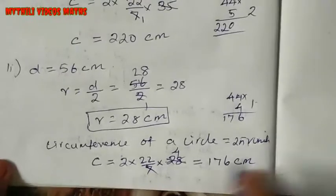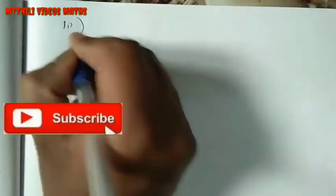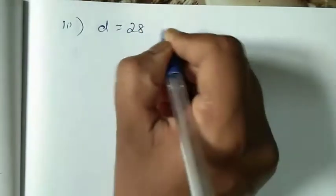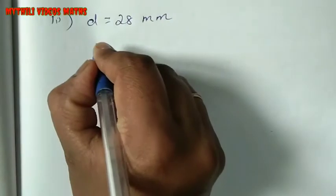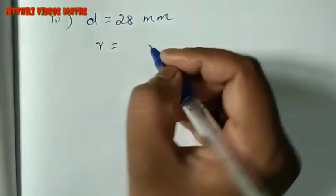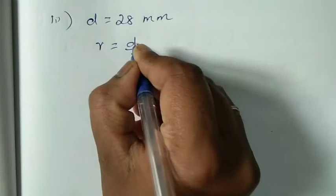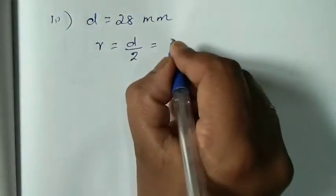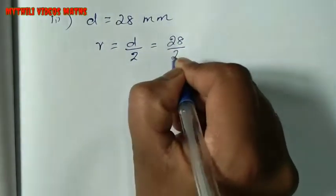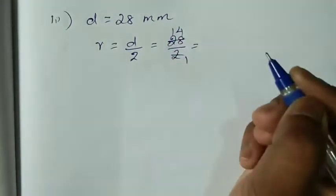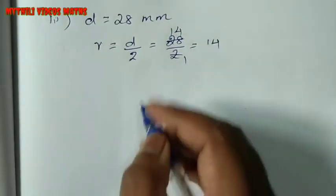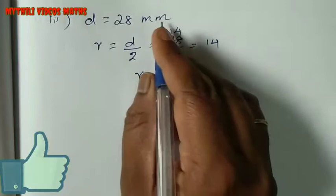Now the third subdivision: D equals 28 mm, that is millimeter. Find the radius using the same formula — radius equals diameter by 2. So 28 divided by 2, cancel: gives radius equals 14 mm.